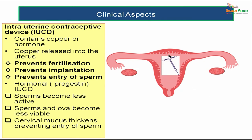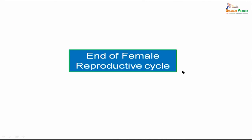The copper T is a T-shaped contraceptive device kept inside the uterus. That is all about the female reproductive cycle in a nutshell. Thank you so much.